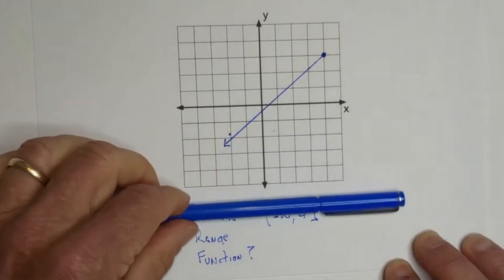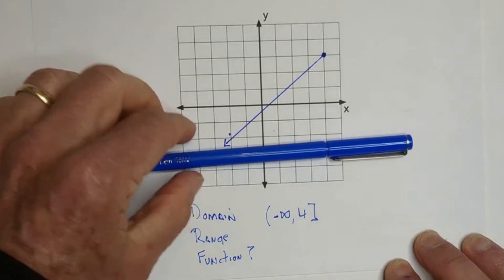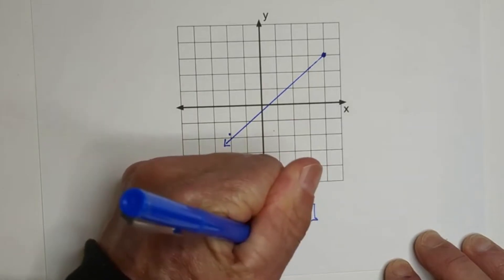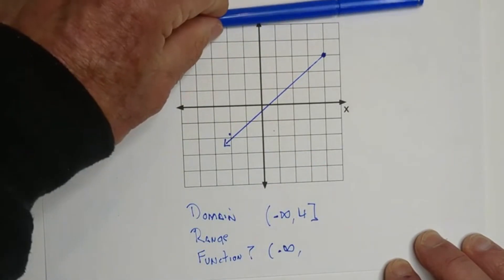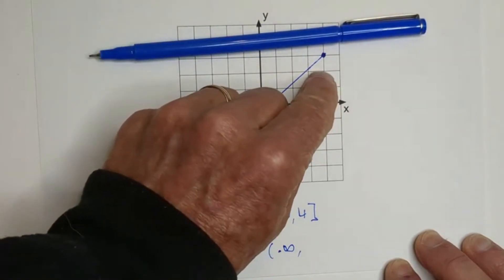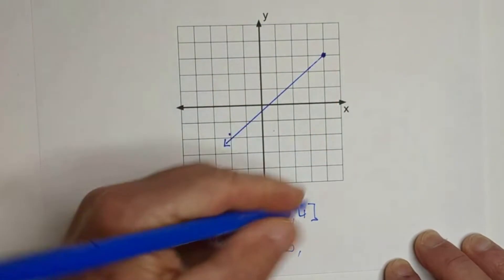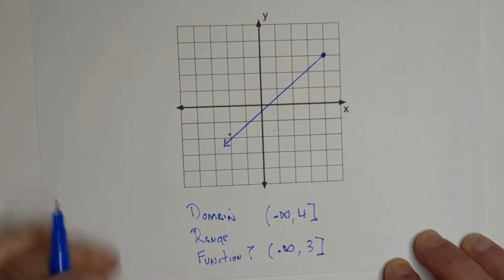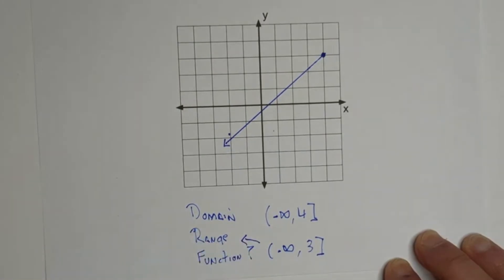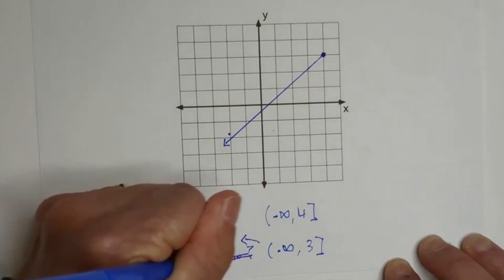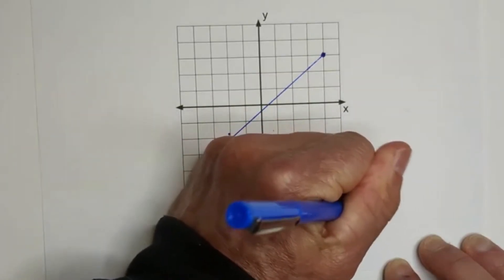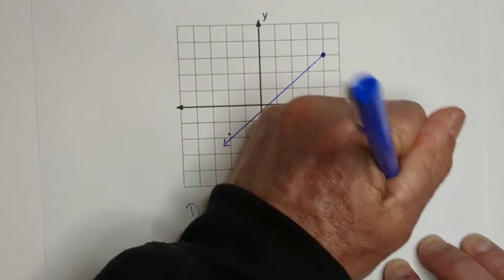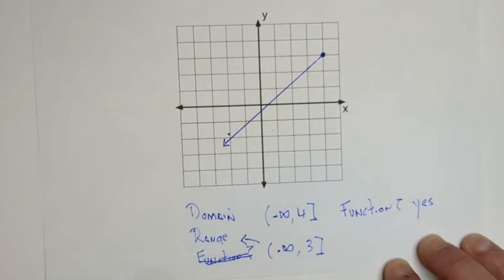For the range, we move up from the bottom and again hit an arrow, so we have negative infinity for the range. Then coming down from the top, it looks like positive three, and it is closed, so we use a bracket. The range is (-∞, 3]. And for the function — does it pass the test? It does not touch in two places, so the answer is yes.